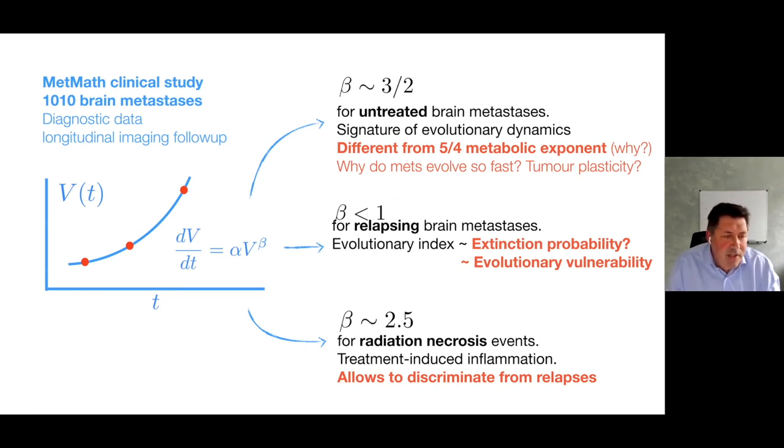Just to summarize what I told you about, we have developed a MedMath clinical study. We incorporated 1,000 brain metastases, and now we're going to a larger clinical study. Our goal is to get to 2,000 to have more data. We have all diagnostic data and longitudinal imaging follow-up. The conclusions of the analysis are that untreated brain metastases have accelerated growth responding close to 1.5. It's three halves.